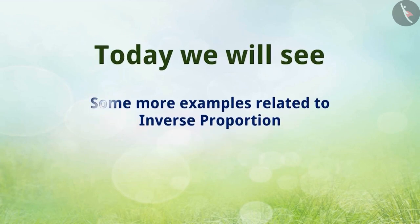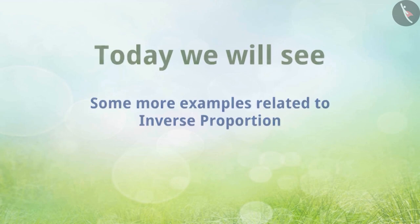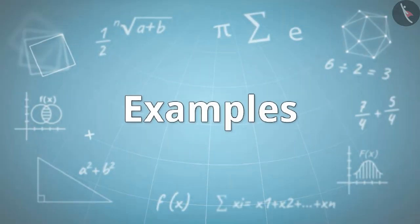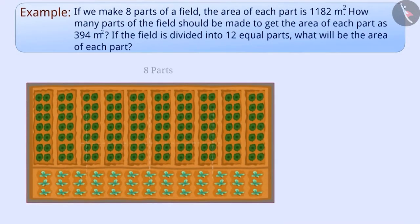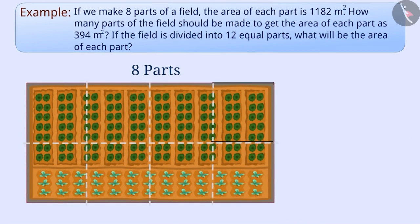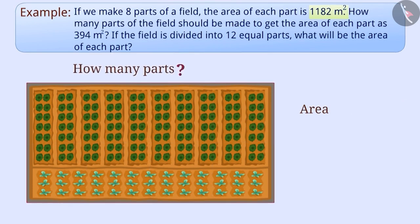Today we will see some more examples related to inverse proportion. If we make 8 parts of a field, the area of each part is 1182 m². How many parts of the field should be made to get the area of each part as 394 m²?